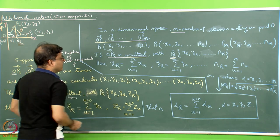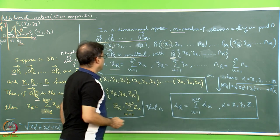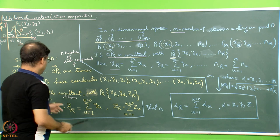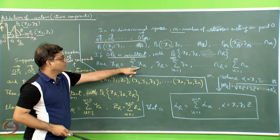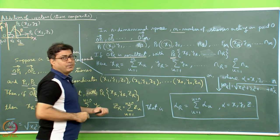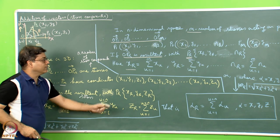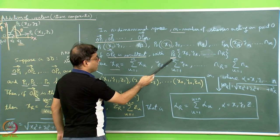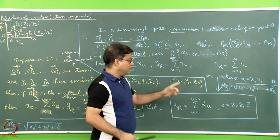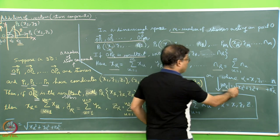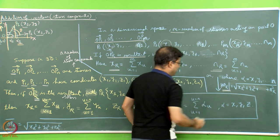Then xr is represented by the sum of all x coordinates: x1 plus x2 up to xm, written as the sum of x_u for u = 1 to m. The difference from the 3D case is that here we sum up to m (the number of stresses) instead of n. Similarly yr equals the sum of y_u for u = 1 to m, and nr equals the sum of n_u for u = 1 to m. The magnitude of the resultant stress OPR is the square root of xr squared plus yr squared plus ... plus nr squared.